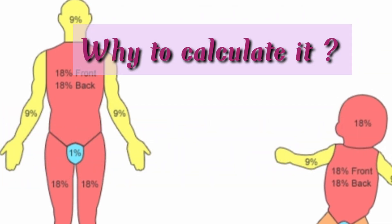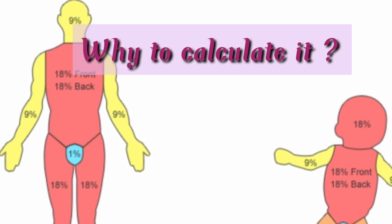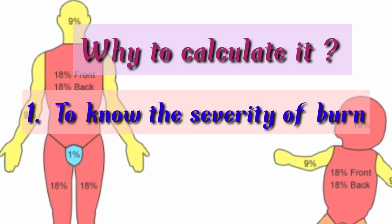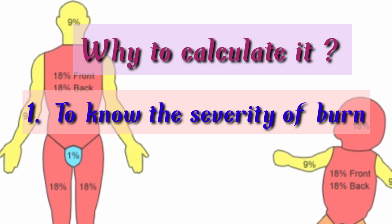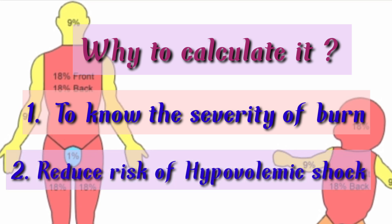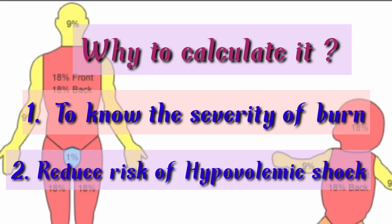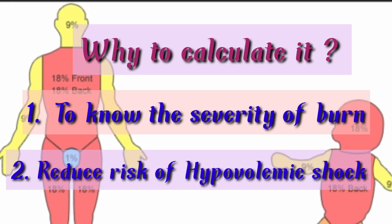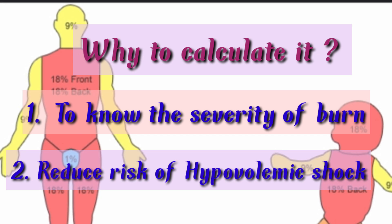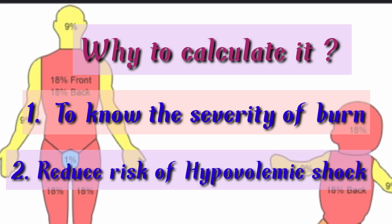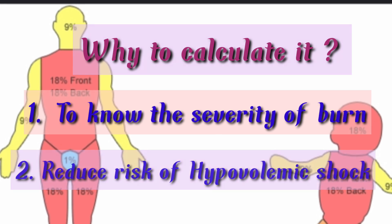Let's see why we need to calculate it — why we need to know the percentage of burn. The first thing is to know the severity of burn; by calculating the percentage, we will identify the severity of burn. The second thing is to reduce the risk of hypovolemic shock, because in the first 24 hours the patient will mainly end up in hypovolemia due to the burn. So to reduce the risk of hypovolemic shock, we need to calculate the percentage and know about the severity of burn.